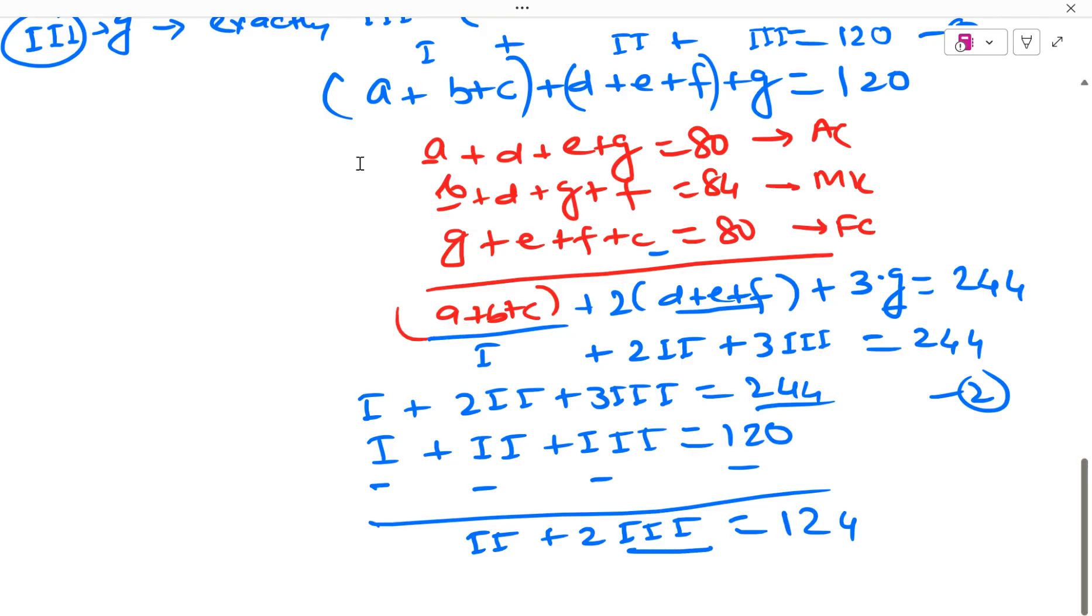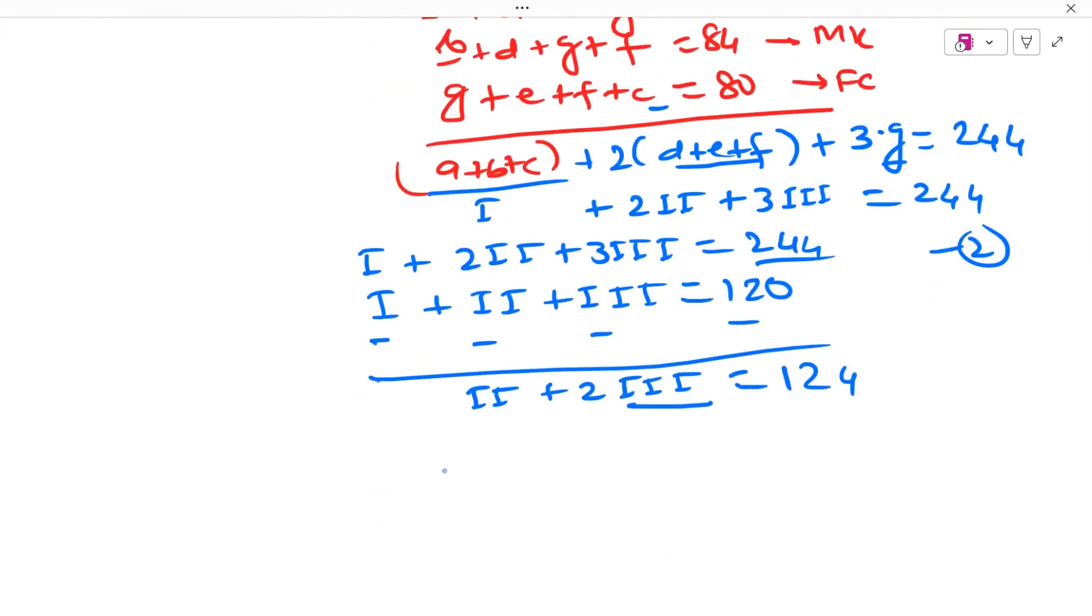Now they are asking us to maximize 3. So maximize 3 means what? If the sum of two things are 124, then I will have to minimize this. Then only I can maximize this. So to maximize this, I will have to assume 2 as 0. And then our 2 into 3 will be 124. And our 3 value will be 124 divided by 2 which comes out to be 62.